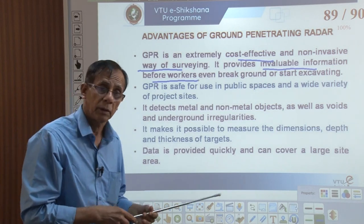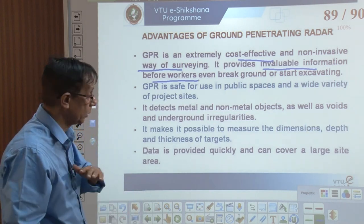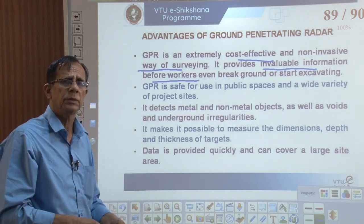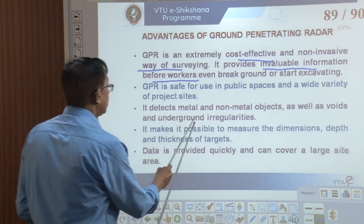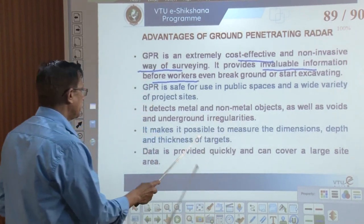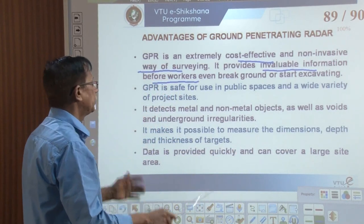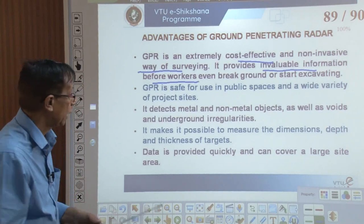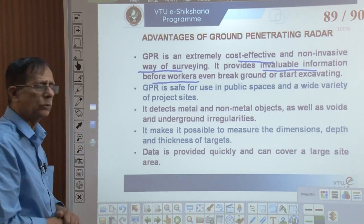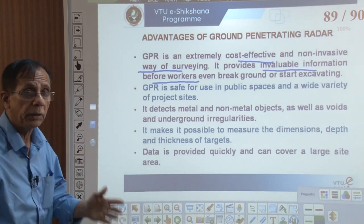Ground penetrating radar has the advantage that when other geophysical techniques like resistivity and seismic are not possible, GPR can be relied upon. It detects metal and non-metal objects as well as voids underground and irregularities. It makes it possible to measure the dimension, depth, and thickness of the target. It is not just qualitative — I am able to say quantitatively what is present.